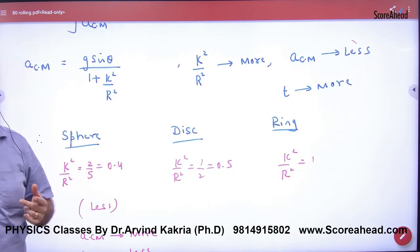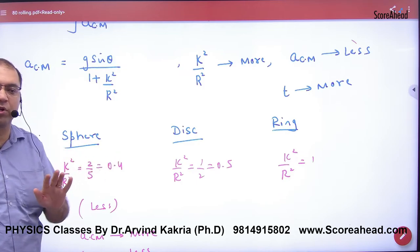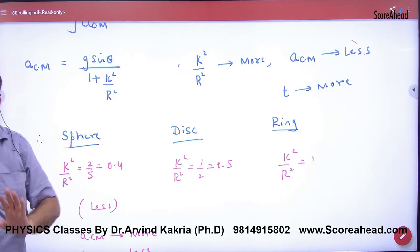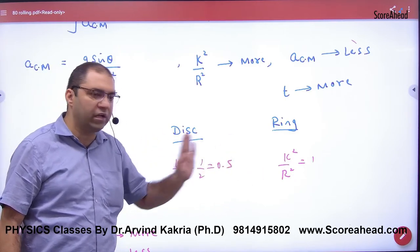So the sphere, which has k² by r² equal to 2/5, is 0.4. The disk is half mr², so half is 0.5. And the ring is 1. Who is the least? The sphere.